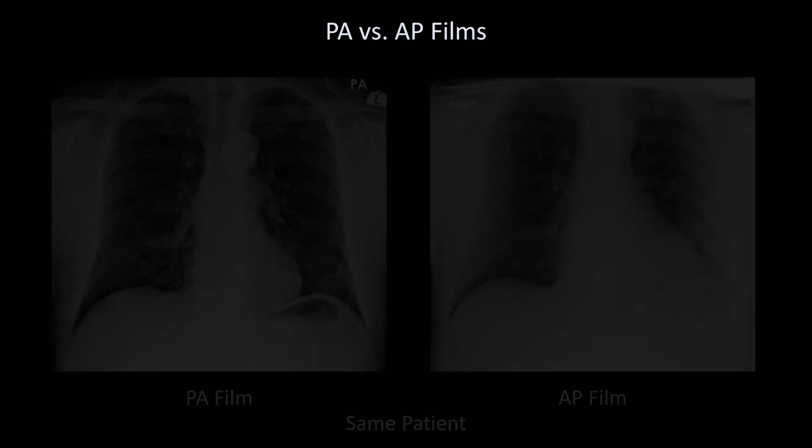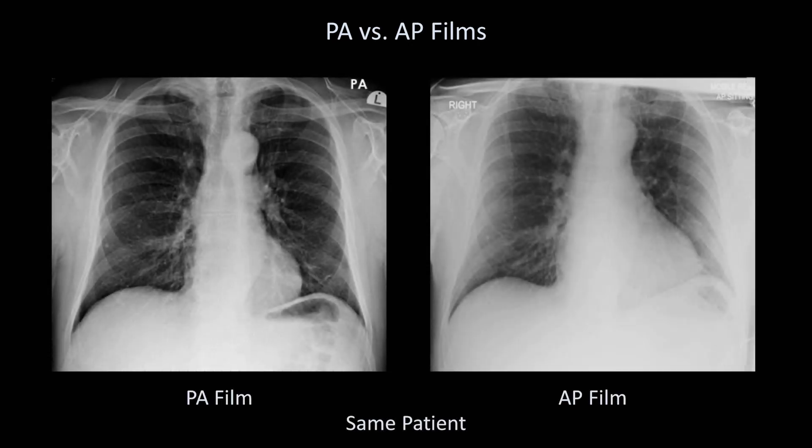To see just how much of a difference this can make, here are two x-rays taken of the same patient minutes apart. Notice how much larger the heart appears on the AP film. The upper mediastinum is also affected, but not as much.